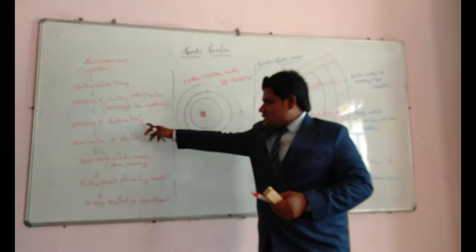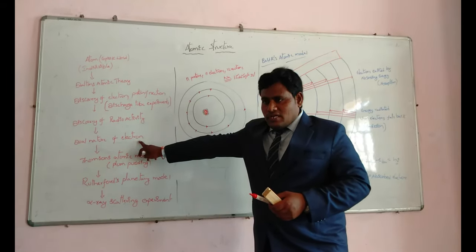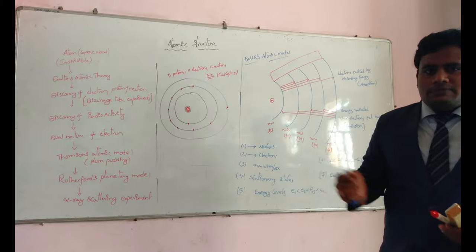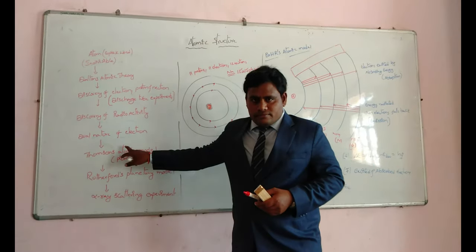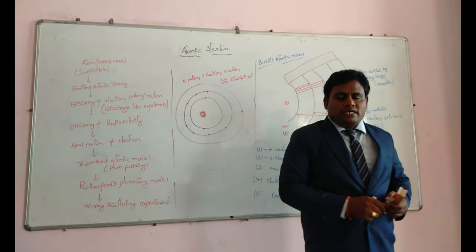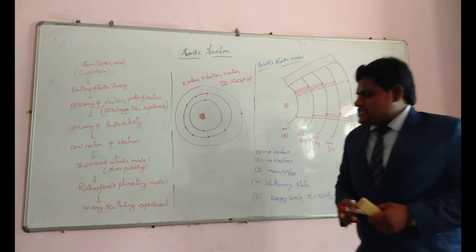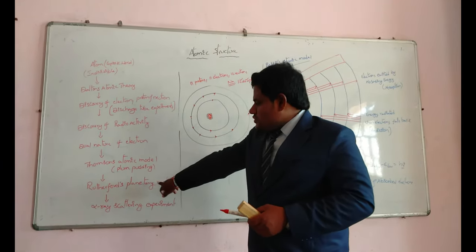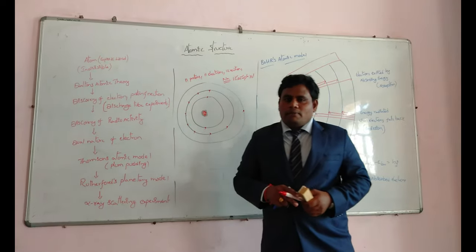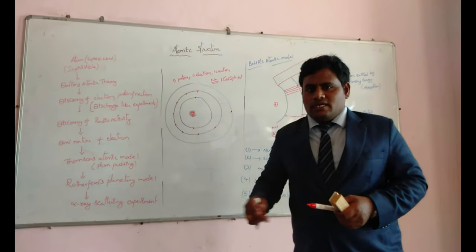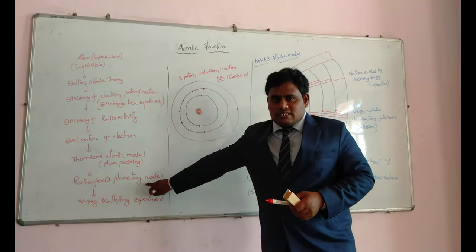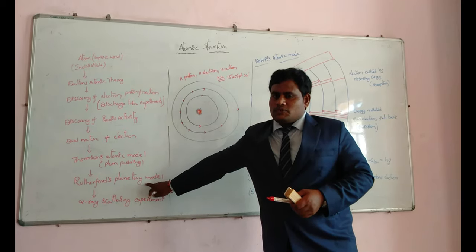After that, the discovery of radioactivity, the discovery of the dual nature of electron, and then Thomson's atomic model was proposed by J.J. Thomson, known as the plum pudding model. After Thomson's atomic model, one more atomic model was proposed by Ernest Rutherford, known as Rutherford's planetary model. Rutherford's planetary model says that electrons are revolving around the nucleus just like in a solar system planets are revolving around the sun. But Rutherford's planetary model failed to explain the stability of the atom.